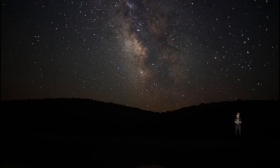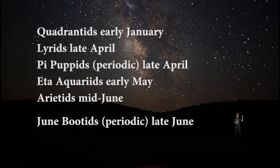If a stream of such pieces come together in the Earth's atmosphere, it's called a meteor shower. There are many showers that happen yearly — some of the names are shown here, and if you want to check them out, I'll put the link in the description.